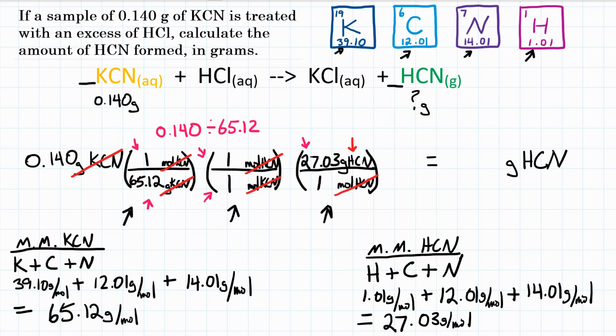And then, third conversion factor, multiply by the top, so times 27.03, and then we would divide by 1, but that's not going to change it. We're going to skip that and just hit equals, and we get 0.0581 grams.